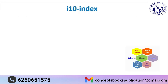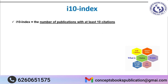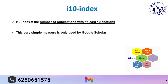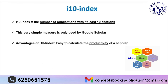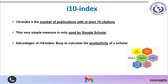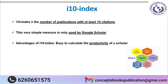The i10 index is the number of publications with at least 10 citations. It is a very simple measure used only by Google Scholar. The advantage of the i10 index is that it is easy to calculate the productivity of a scholar — for example, if someone has published 50 articles but has an i10 index of 2, it means only 2 of those articles have at least 10 citations, showing that level of productivity to the research community.